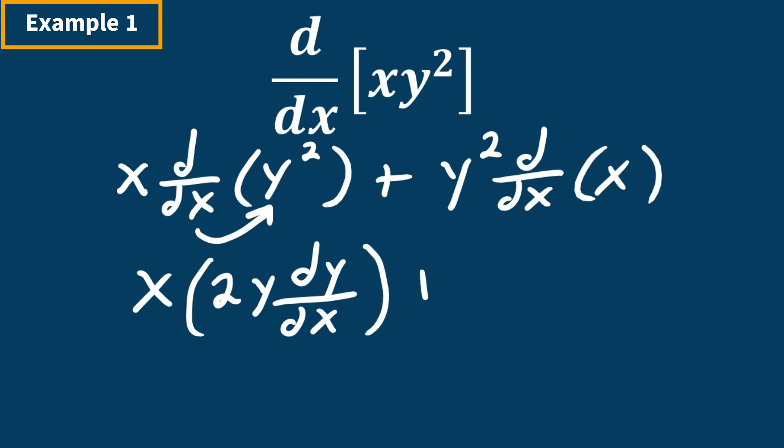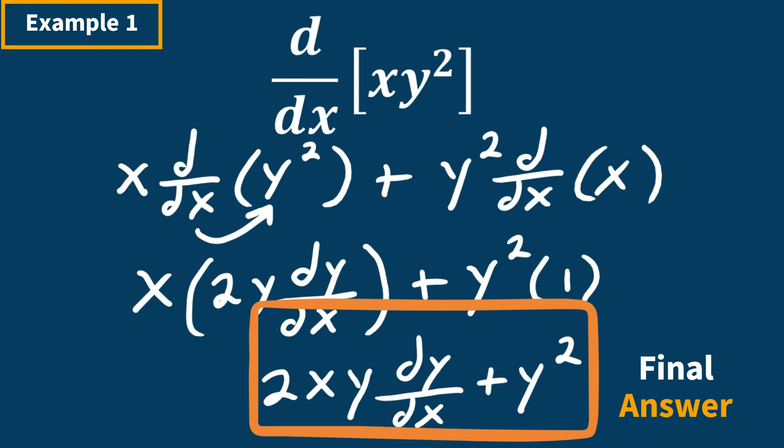And that is going to be added by y squared is the same, and the derivative of x is just 1. So now what we can do is just rewrite the problem. This is going to give us 2xy dy over dx plus y squared. And that's going to be our final answer.